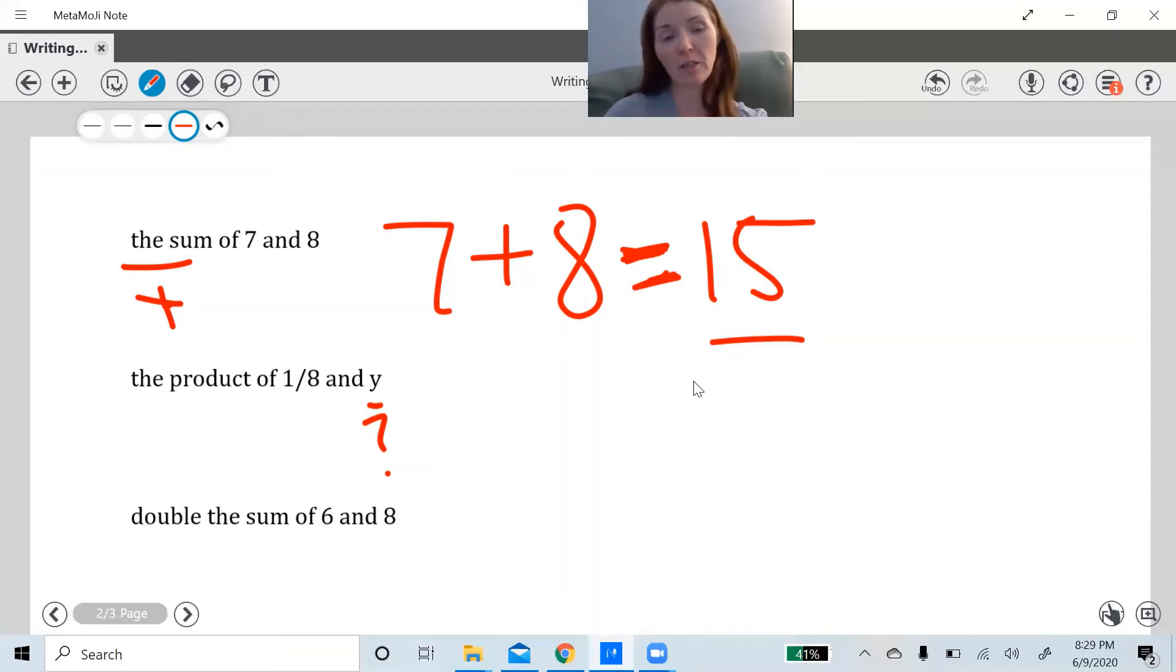So let me show you what that looks like. So 1/8, the product means I'm multiplying. So 1/8 and y. So I'm going to do 1/8 times y. Okay, now again, I don't know how to solve it. It's just an expression. If I knew more information, I could use an equal sign and solve for the other side of the equation, but I don't know it. So we're going to leave it as an expression without an equal sign.